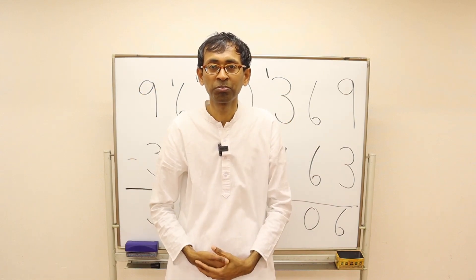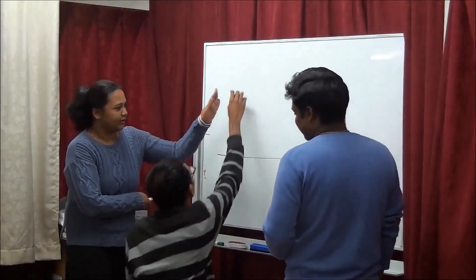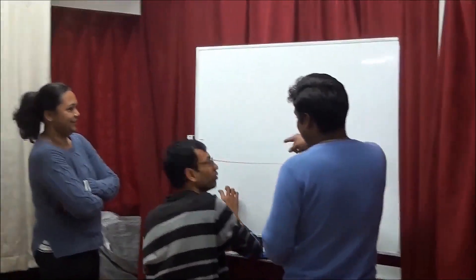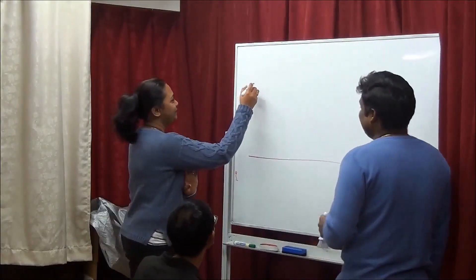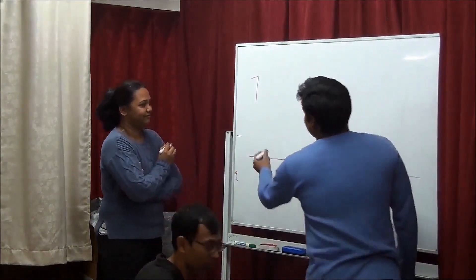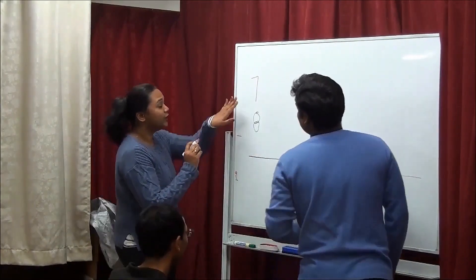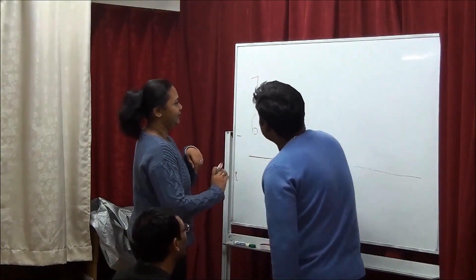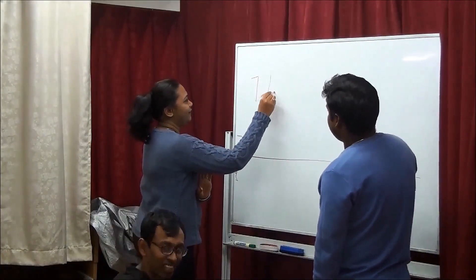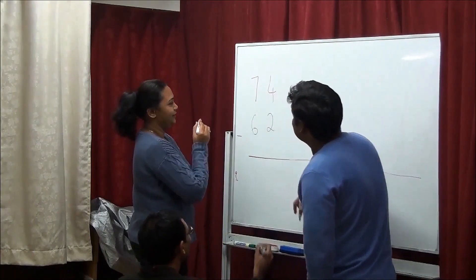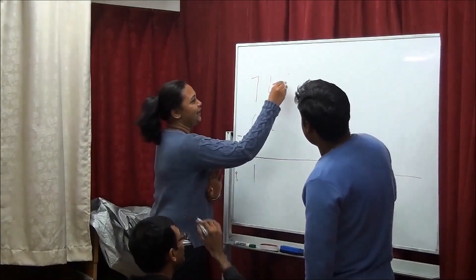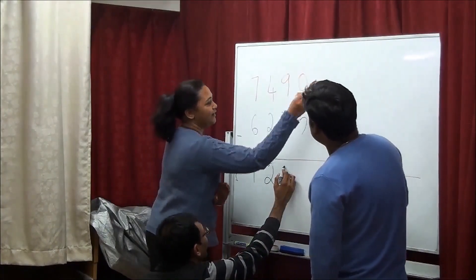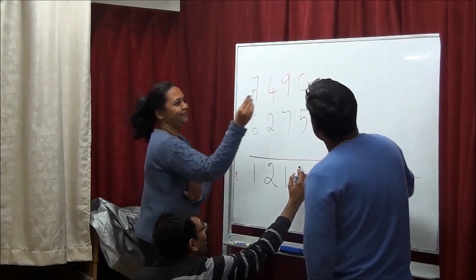In the classroom demo: one student writes the problem digit by digit on the board while another writes the answer digit by digit at the same time. The teacher instructs them to go one digit at a time, and the students call out and write the answer digits — 2, 1, 2, 1, 2, 2, 1, 5, 1, 5 — as the problem is still being written, demonstrating real-time left-to-right mental subtraction.